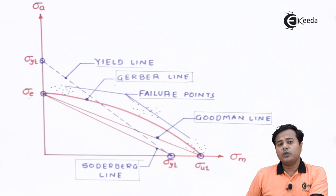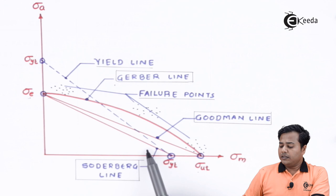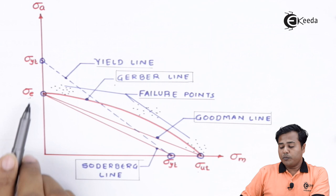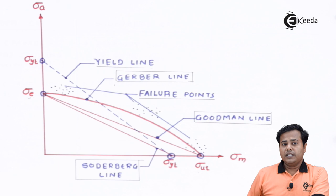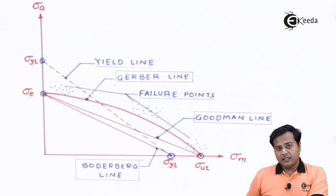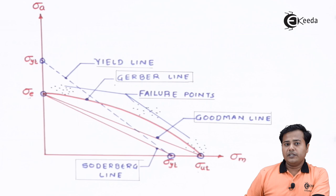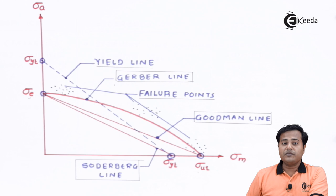This straight line connecting the endurance limit with the ultimate strength is called the Goodman line, based on Goodman's criteria. The third line connects the endurance limit point with the yield stress point and is again a straight line. This line avoids all the failure points very clearly — no failure point falls inside it — and is called the Soderberg line, proposed by the Soderberg criteria.